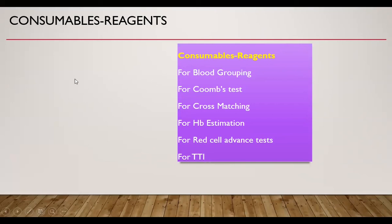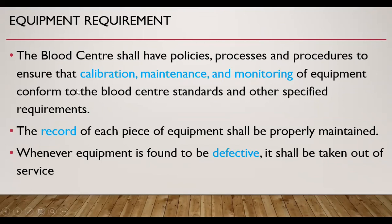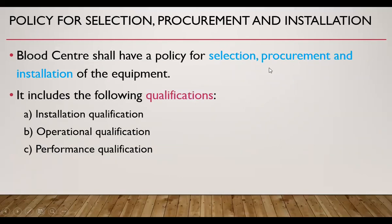Blood centres have policies and procedures to ensure that calibration, maintenance, and monitoring of equipment conform to the blood centre standard and other specified requirements. Equipment should be properly maintained and calibrated, and monitored. We should have an equipment log register — the record of each piece of equipment shall be properly maintained, including comprehensive maintenance contracts. Whenever equipment is found to be defective it shall be taken out of service immediately. The blood centre shall have a policy for selection, procurement, and installation of equipment, including installation qualification, operational qualification, and performance qualification.